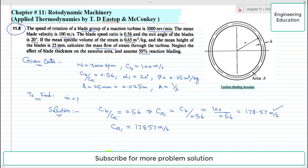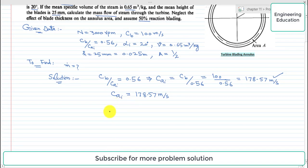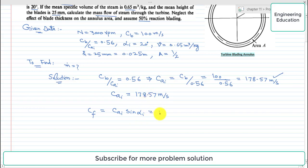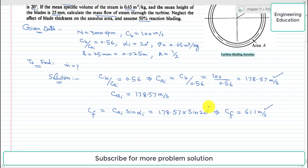Further, the flow velocity can be calculated. Flow velocity is represented by cf and it equals ca_i multiplied by sin(alpha_i). With alpha_i = 20 degrees and ca_i = 178.57, putting the values: 178.57 × sin(20°). Simplifying this, the value of flow velocity cf = 61.1 meters per second.